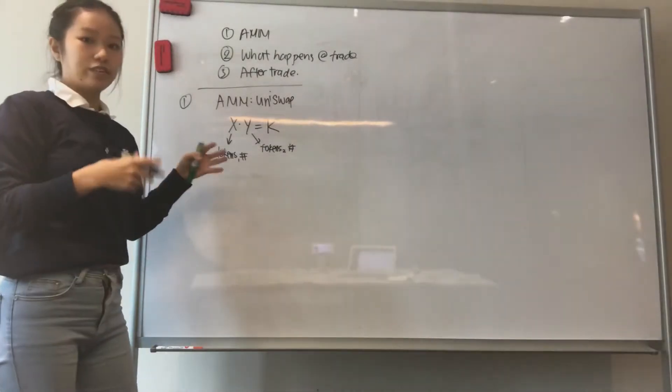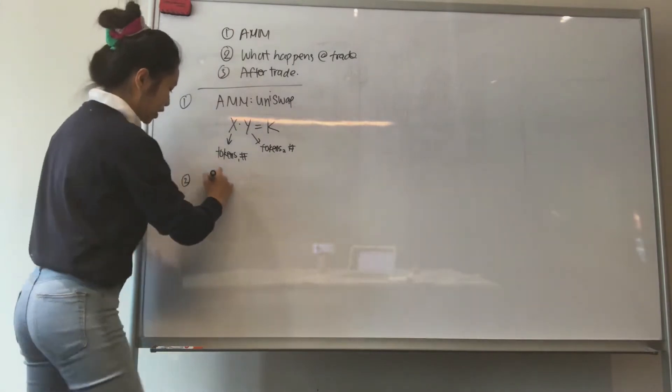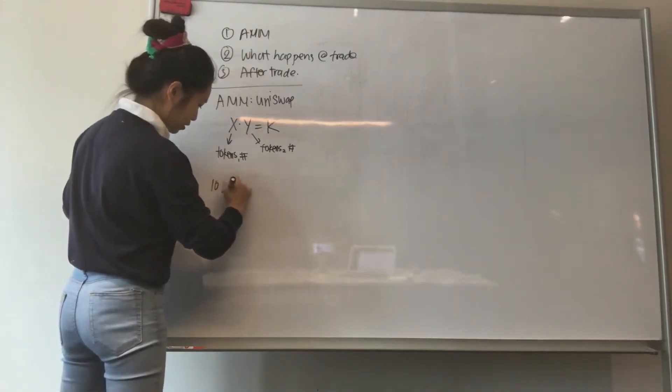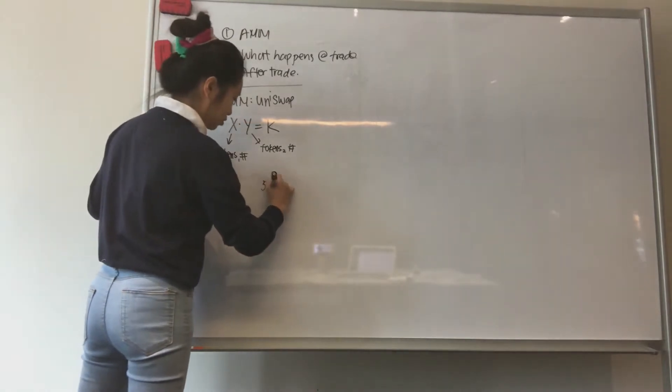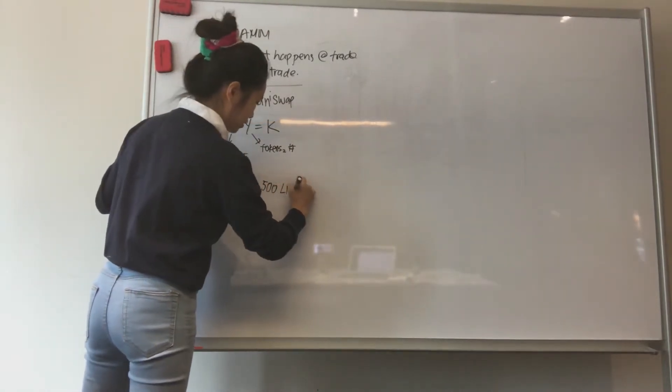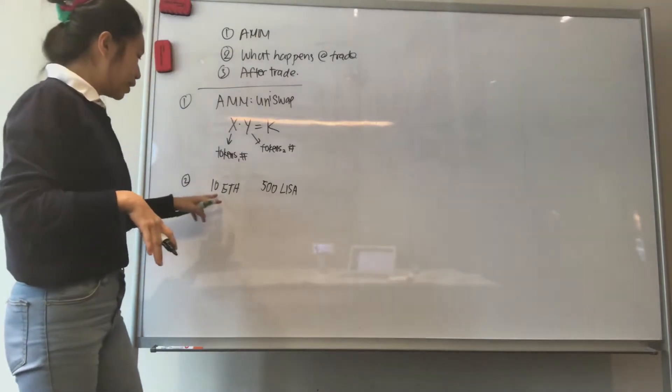So let's say we have this pool which has 10 ETH and 500 LISA tokens total.